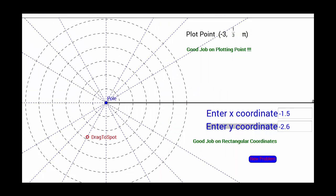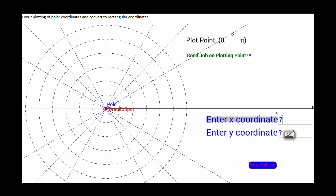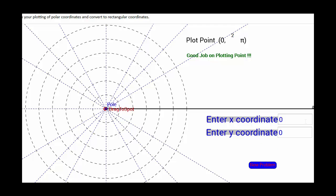And we are correct. Here we have the point with radius 0 and theta equals 2π. Well, it doesn't matter what theta is — if our radius is 0, then our point is at the origin. We know that in our x, y system, that is the point (0, 0).